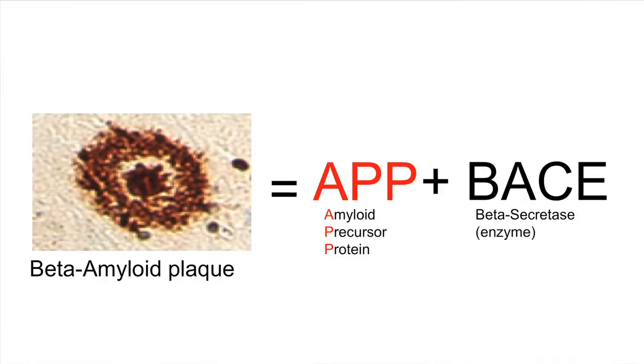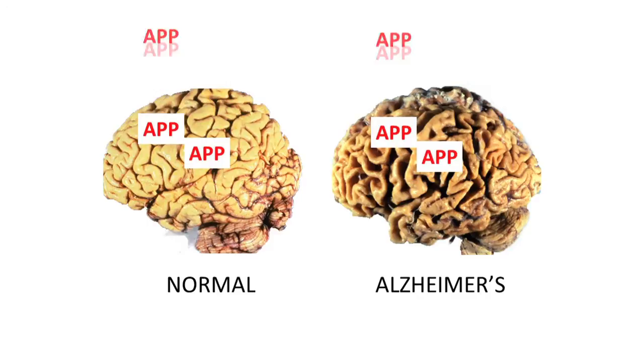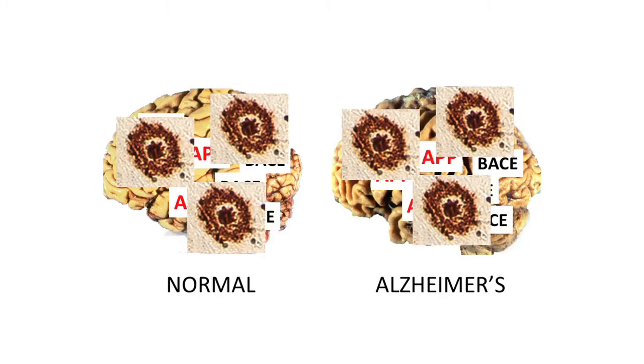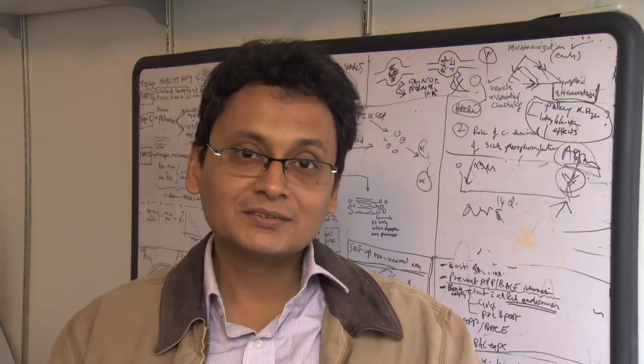Both APP and BACE are made in huge quantities in both normal and Alzheimer's brains, and if they were to constantly meet you would have a huge amount of amyloid beta plaques and consequent pathology. But this obviously does not happen because we don't all get Alzheimer's disease. So the question is, why not?